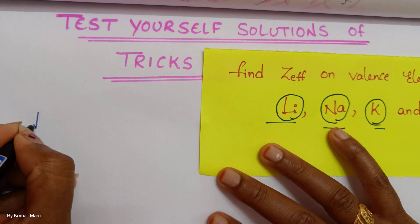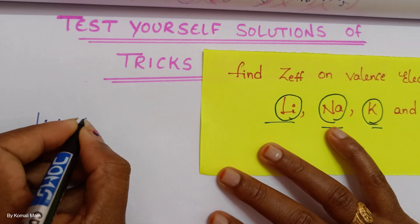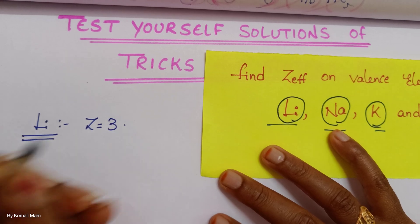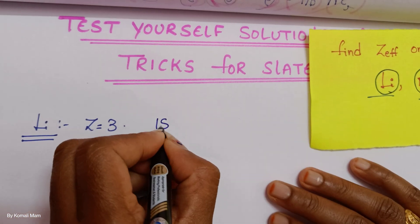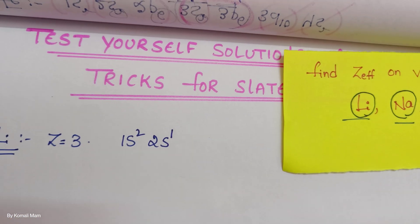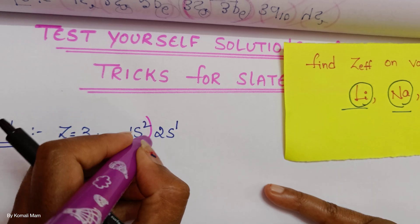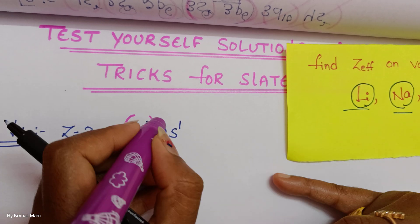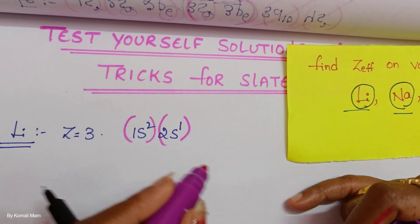Try lithium. What is the atomic number of lithium? Hydrogen, helium, lithium. Atomic number is 3. So what is the electronic configuration? 1s2, 2s1. So how to group this? I told you S like this. First shell only S electron is there, second shell only S electron is there.